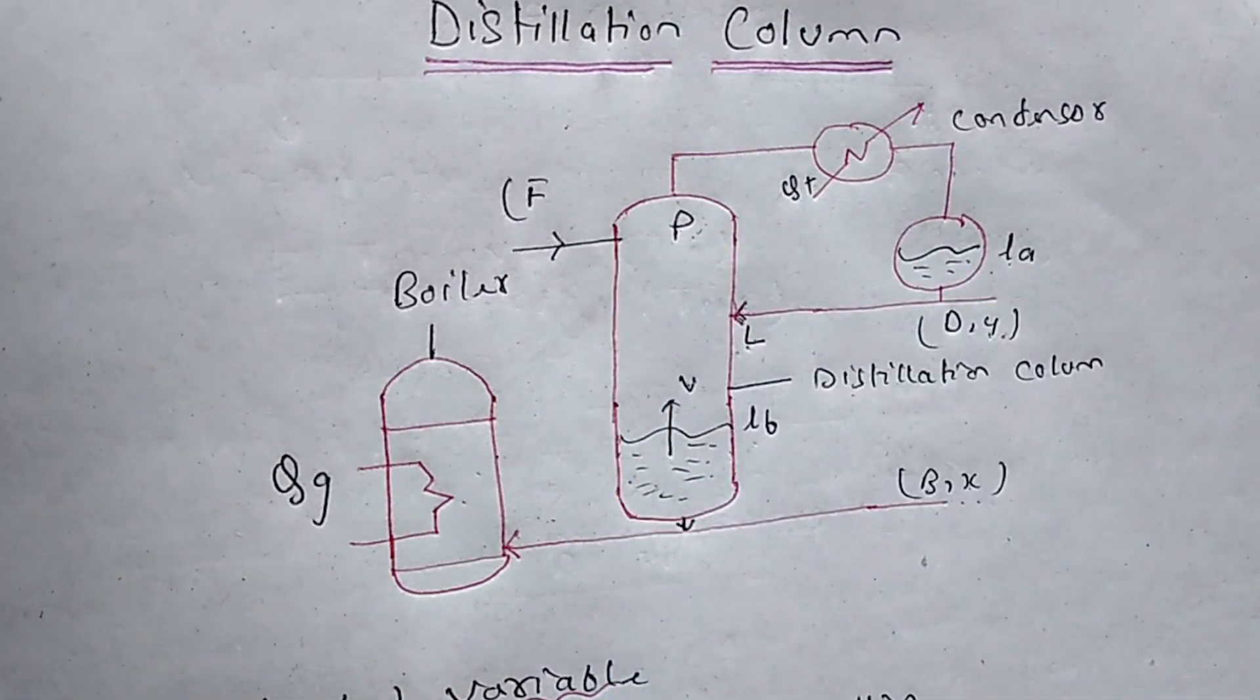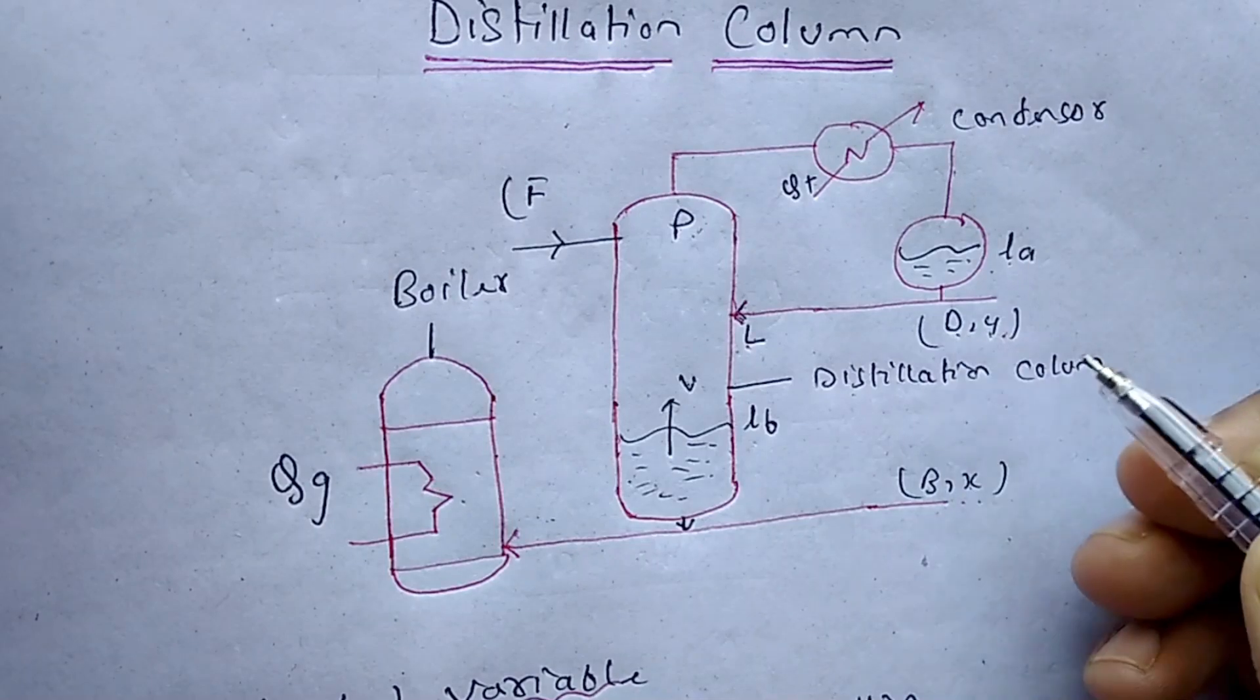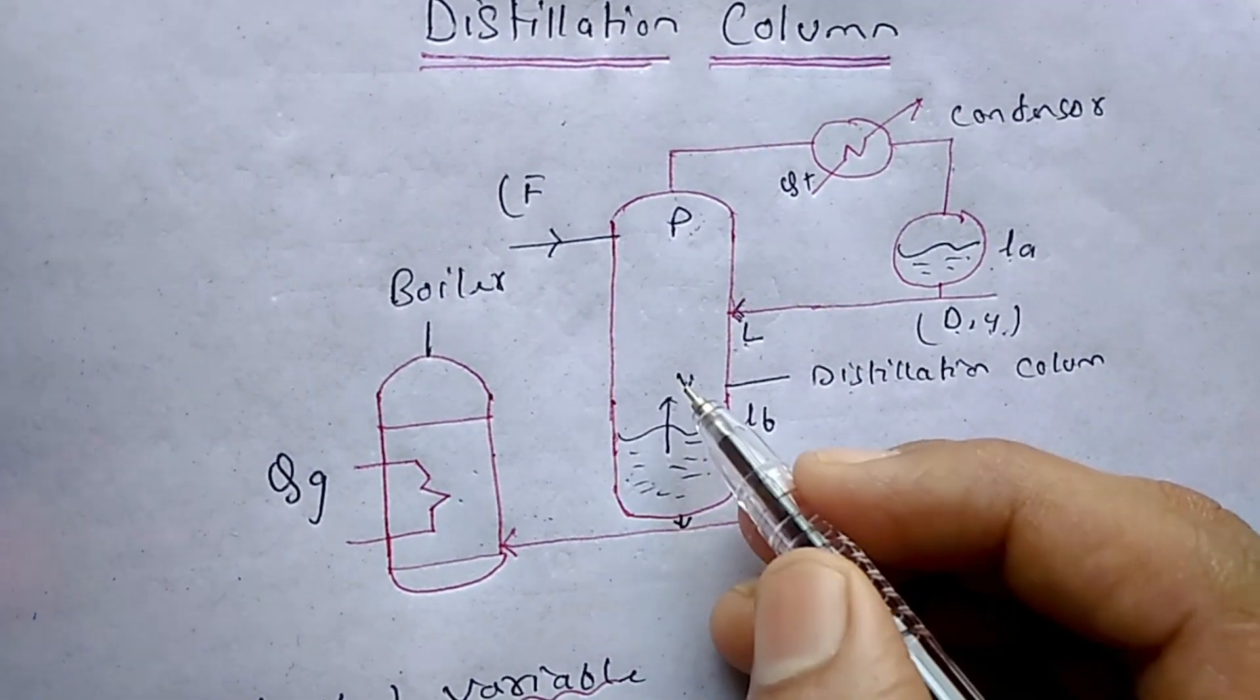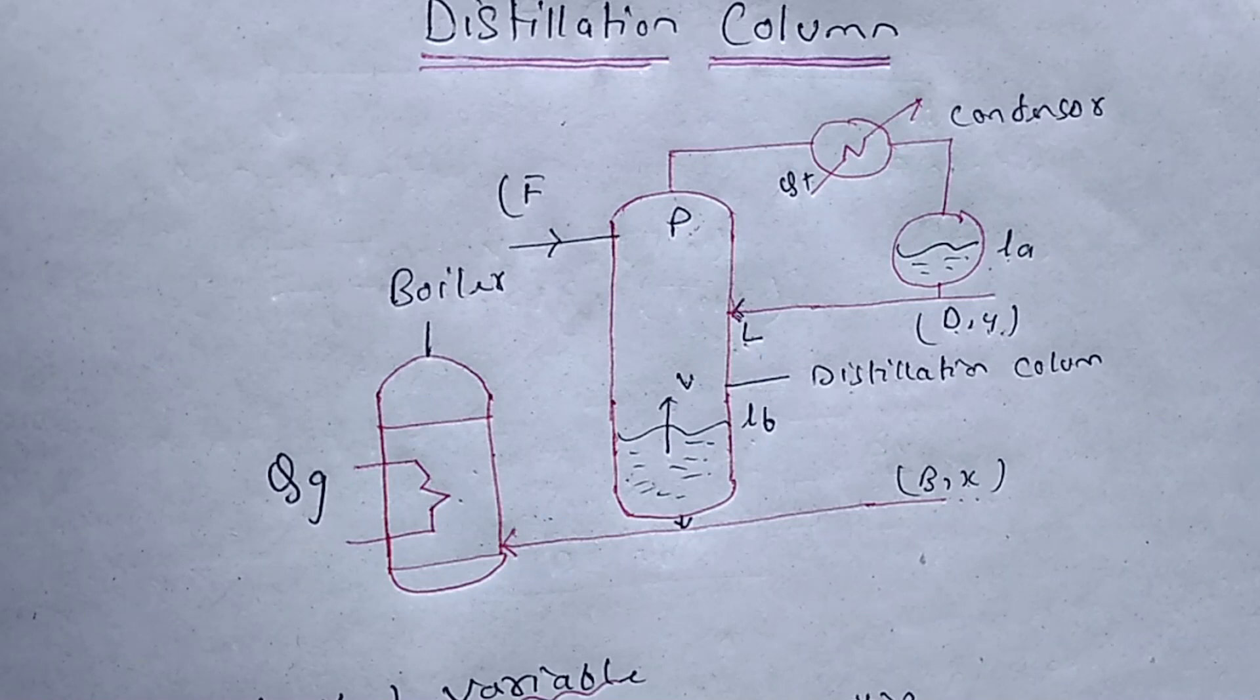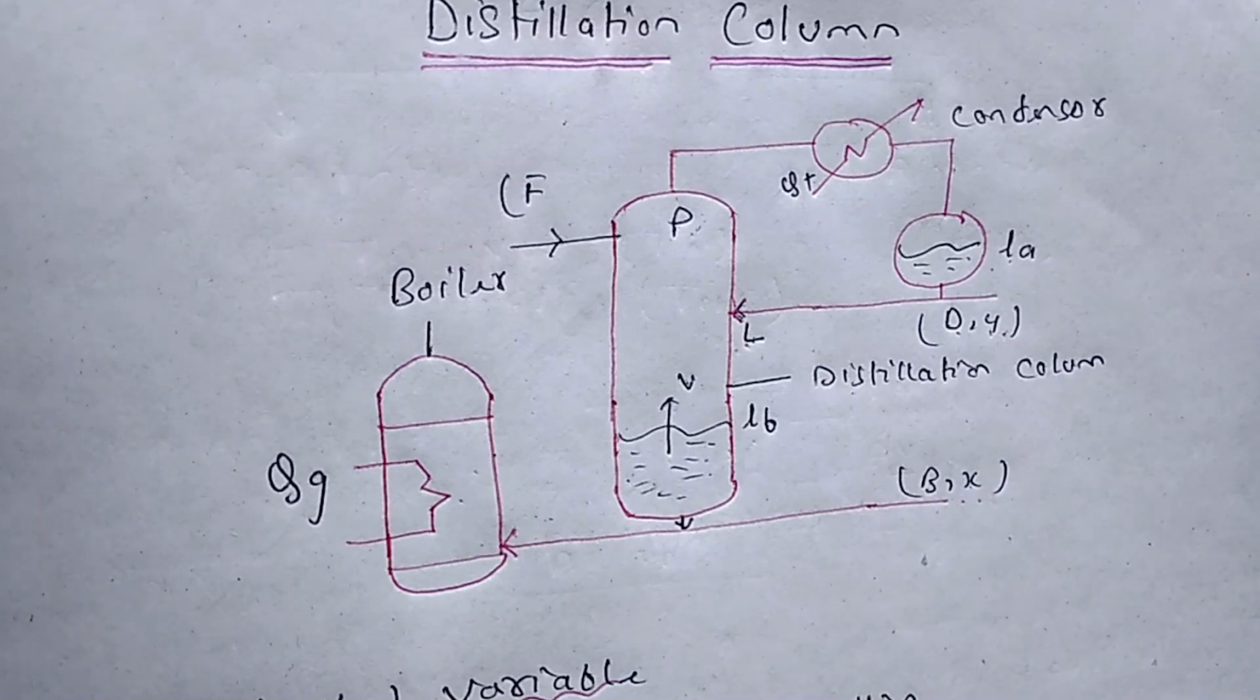Now we go to the manipulated variable. First, this D is the distillate flow. And B is the bottom product flow. This V is vaporization rate. And L, what is L? This is the reflux ratio. I told earlier, this is the reflux ratio - the ratio of amount of product to be recycled back to the top of the column.